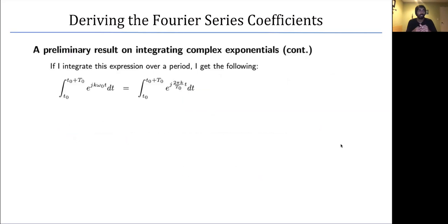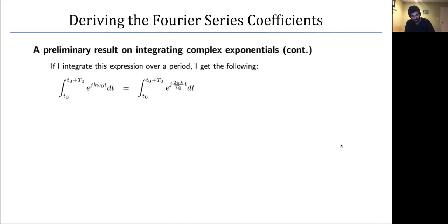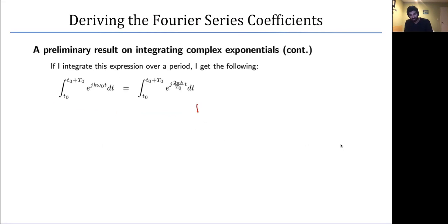Now let's look at the integration of the complex exponential over a period. If I were to take the complex exponential and integrate it over a period, what do we get? I want you to pause the video and see if you can actually compute this integral. We start with the integral of that complex exponential over one period, substituting 2π over T_naught instead of ω_naught — that's just a trivial substitution. Go ahead and pause the video and see if you can check your understanding.